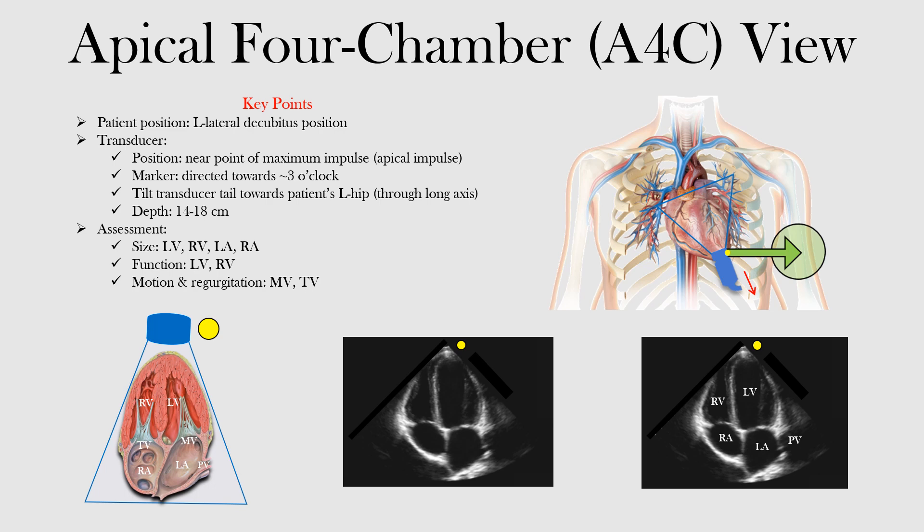We've made our way through the parasternal long axis view and the different views in the parasternal short axis view, and now we're making our way to the apical four-chamber view. With the parasternal long and short axis views, we had our patient in the left lateral decubitus position — we'll also have the patient in this position here. We're going to move the transducer to or near the point of maximal impulse, the apical impulse, which is about here at the apex of the heart.